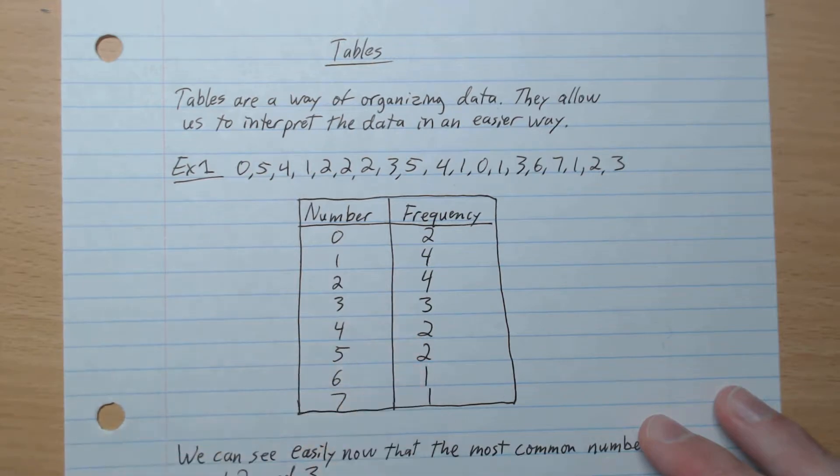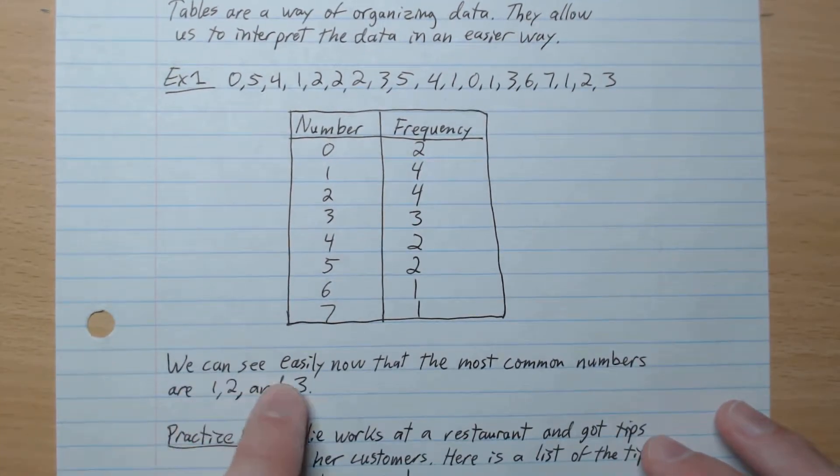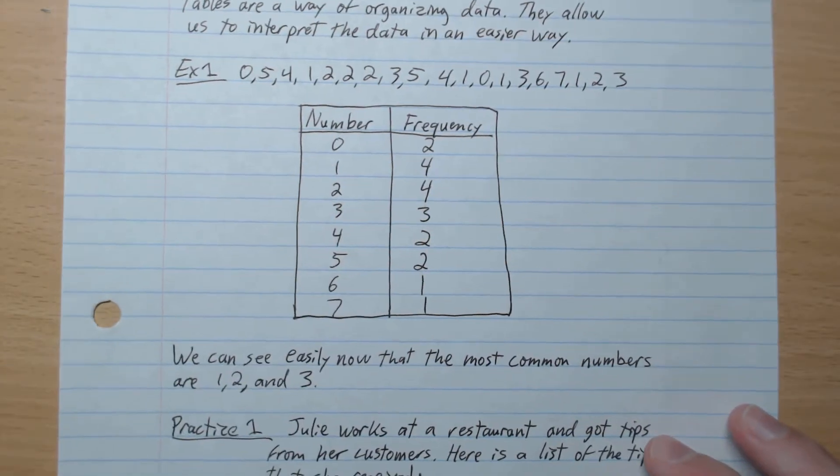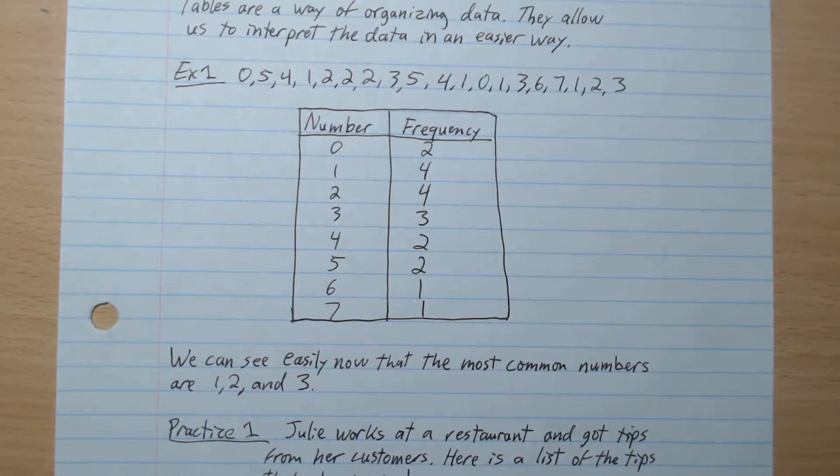4, 3, 2, 2, 1, 1 like that. Now it's easier to see that the most common numbers are 1, 2, and 3 that appear in that list. That's just an example of how we can use data.